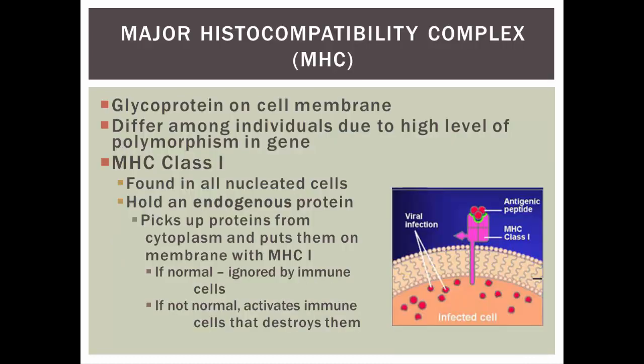To recognize self from non-self, we use the major histocompatibility complexes (MHC). These are glycoproteins on the cell membrane. They differ among individuals because of a polymorphism in the gene — there are lots of different combinations possible. So everybody pretty much has a different MHC, and only people who have the same ones would be identical twins.